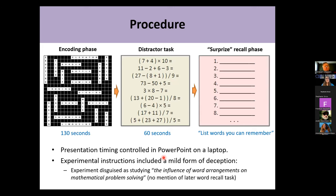The procedure used mild deception: we sold the experiment as studying the influence of word arrangements on subsequent mathematical problem solving. There was always an encoding phase where participants saw an array and had to study it for about two minutes. Then there was a distractor task where they solved as many mathematical equations as possible within one minute. Then, unbeknownst to participants in advance, there was a surprise recall task. We gave them a sheet of paper and said: please write down all the words you can remember from the initial crossword phase.